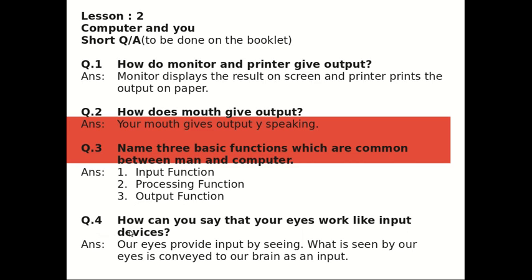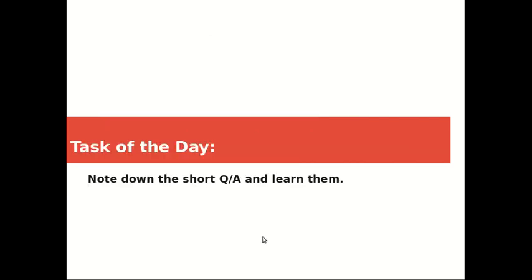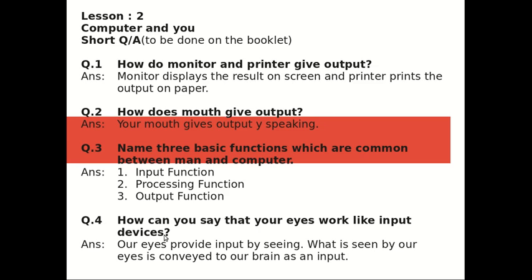Question number four: How can you say that your eyes work like input devices? The answer is our eyes provide input by seeing — what is seen by our eyes is conveyed to our brain as input, and then our brain decides what to do.